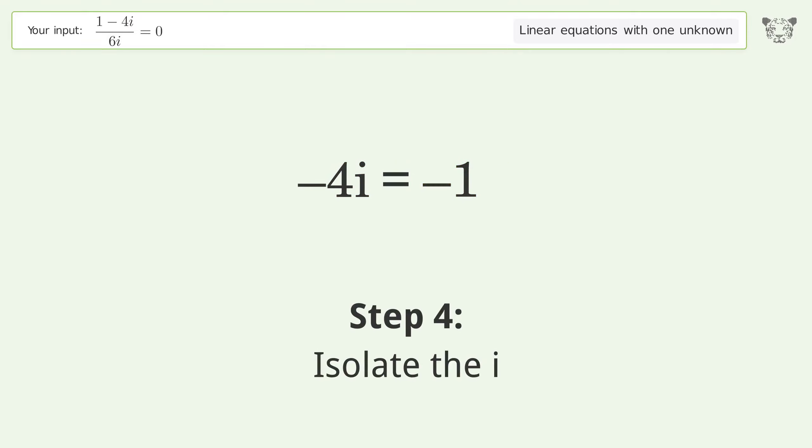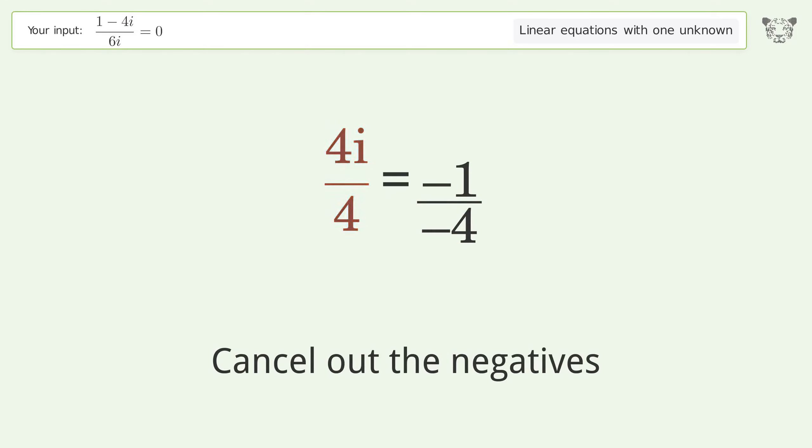Isolate the i. Divide both sides by negative 4. Cancel out the negatives. Simplify the fraction.